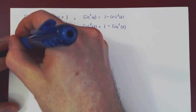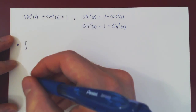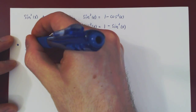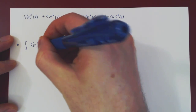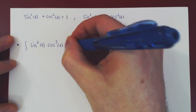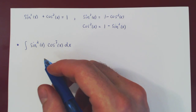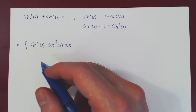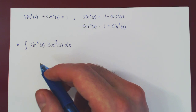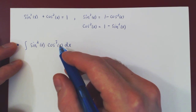Here's our first example: integrate sin²(x)cos³(x) dx. The idea is to always either factor a sin(x) and express everything in terms of cosine, or factor a cos(x) and express everything in terms of sine — and we always factor from the odd power.